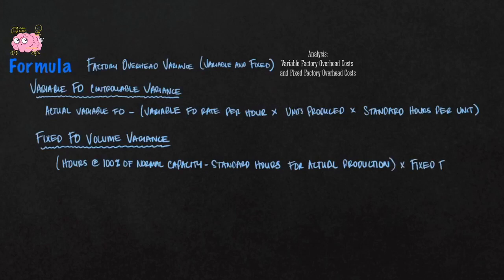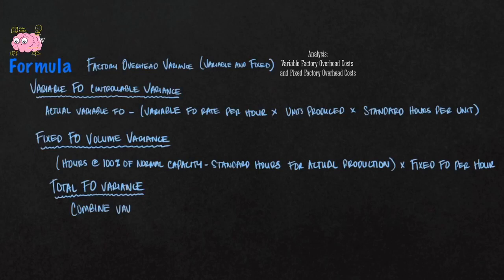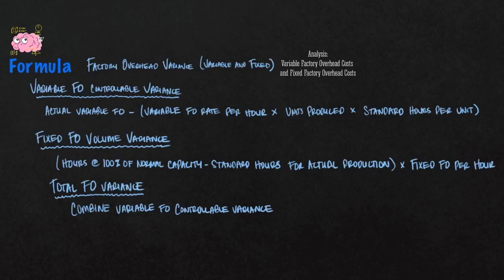Now that we have both formulas, we've calculated variable factory overhead variance and fixed factory overhead volume variance. The last variance to calculate is basically a total for factory overhead. For the total factory overhead variance, you combine the variable factory overhead controllable variance with the fixed factory overhead volume variance, adding the favorable or unfavorable result from each variance together.